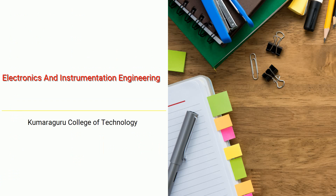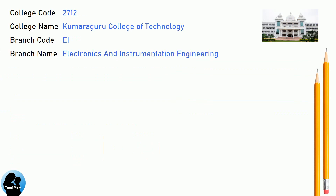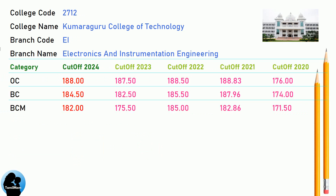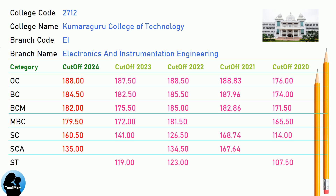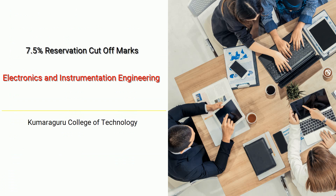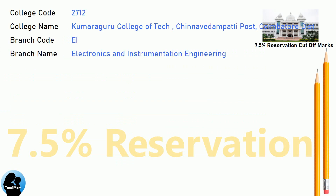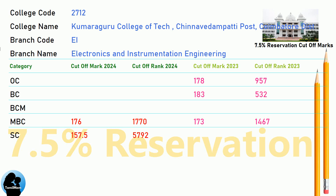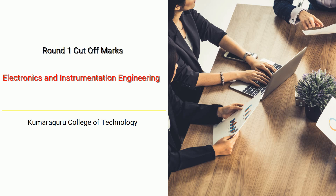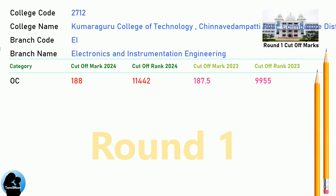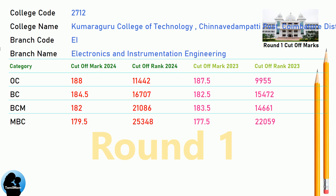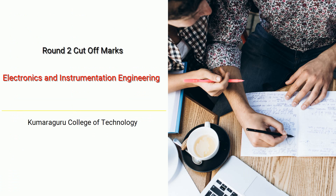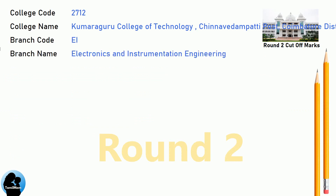DNA cutoff for Kumaraguru College of Technology in Electronics and Instrumentation Engineering. DNEA Round 1 cutoff and DNEA Round 2 cutoff for Kumaraguru College of Technology in Electronics and Instrumentation Engineering.